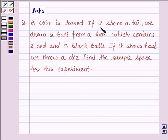A coin is tossed. If it shows a tail, we draw a ball from a box which contains two red and three black balls. If it shows head, we throw a die. Find the sample space for this experiment.